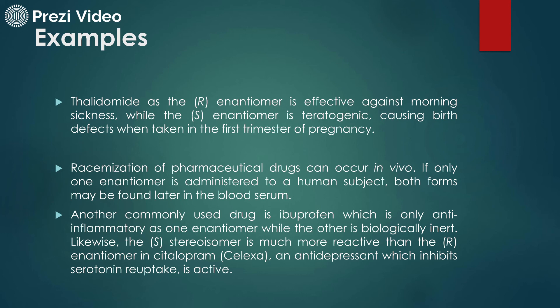You can mention five to ten examples where the R form is more active, the S form is more active, or even the racemic mixture is active — because the total optical rotation becomes zero in a racemic mixture, as both forms rotate in opposite directions and neutralize each other.